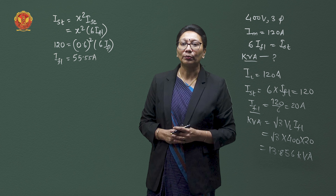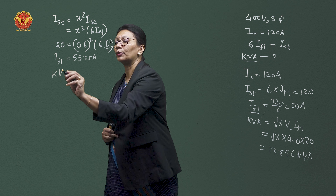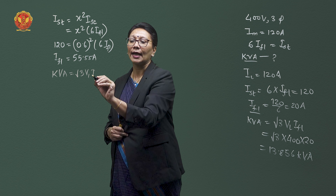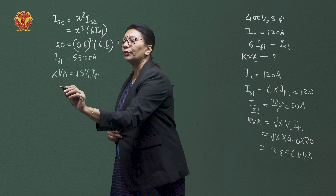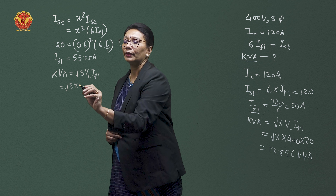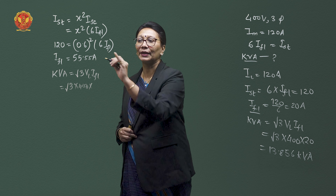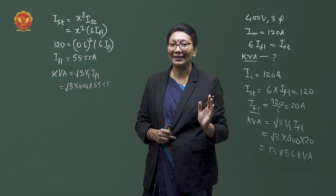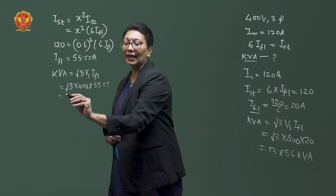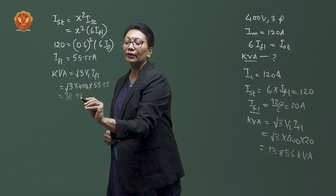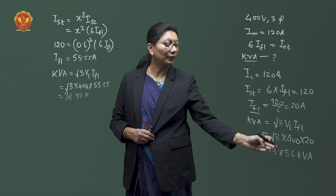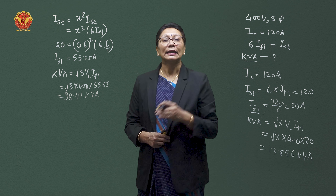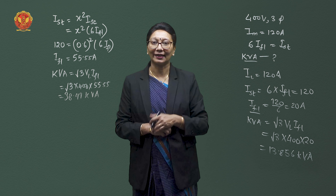For the maximum permissible KVA rating with auto transformer tapping, KVA equals root 3 times VL times IFL. With VL equal to 400V and full load current equal to 55.55A, the KVA rating is 38.49 KVA — significantly enhanced compared to direct online starting of 13.85 KVA.